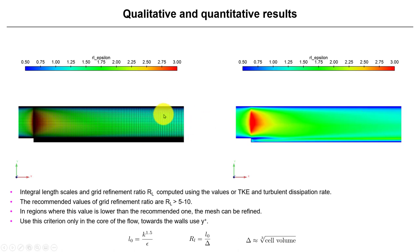By the way, you use this criterion in the core of the flow. Towards the wall you're going to use y-plus as we have seen. See that here you'll need a little bit more refinement. This is how you can get an estimate of how good or how bad is your mesh by computing these integral scales.